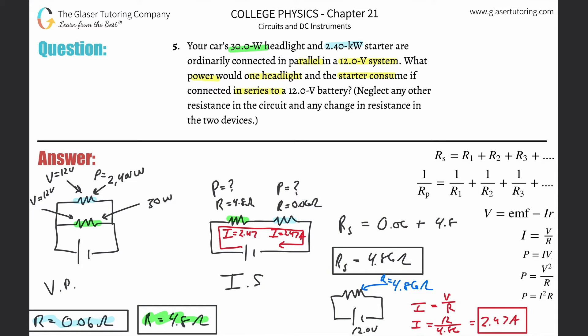Now that I know the current and the resistance of each component, I can find the power using P = I²R. For the green resistor (headlight, 4.8 ohms): P = 2.47² × 4.8. Using the exact calculator value, that comes out to about 29.2 watts — close to the original 30 watts.